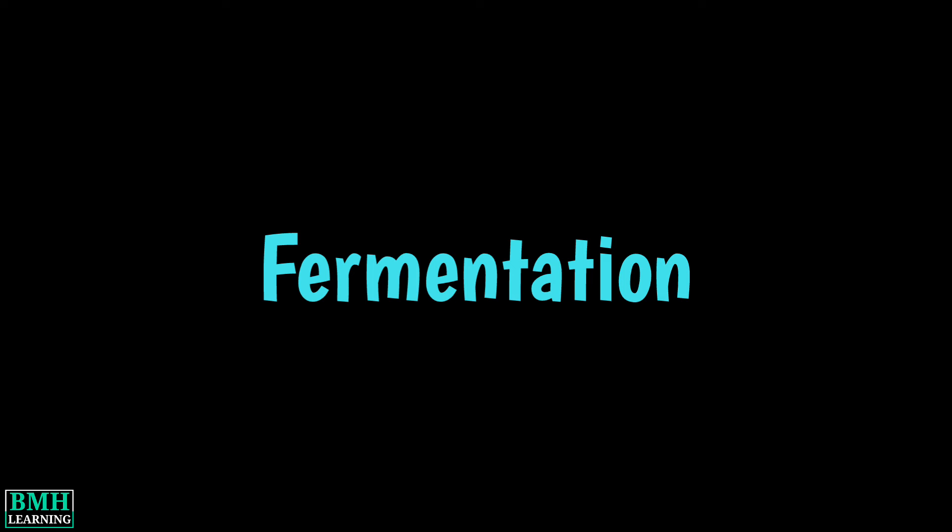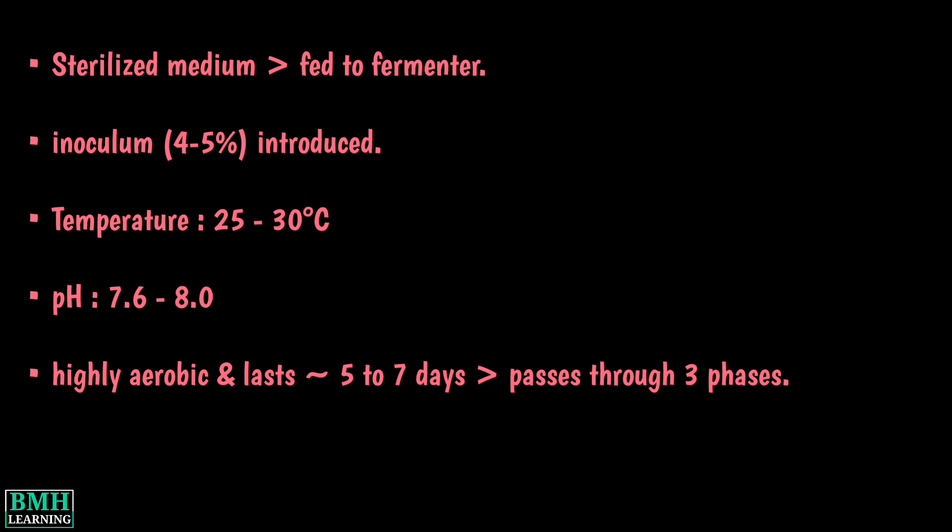For fermentation, sterilized liquid medium with all the above substances is fed to the production fermenter. An appropriate volume of inoculum — about four to five percent — is introduced into it. The optimum fermentation temperature is in the range of 25 to 30 degrees centigrade, and the optimum pH range is between 7.6 and 8. The fermentation process is highly aerobic, lasts approximately five to seven days, and passes through three phases.